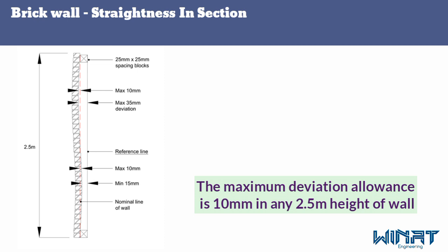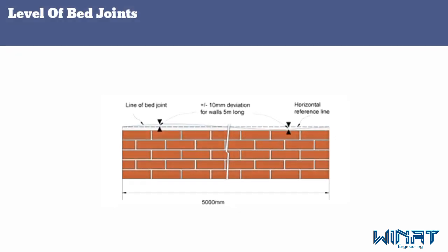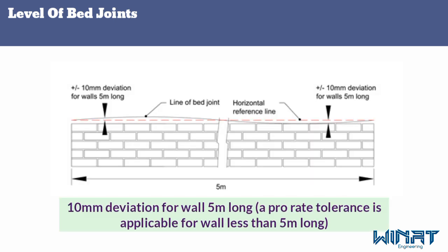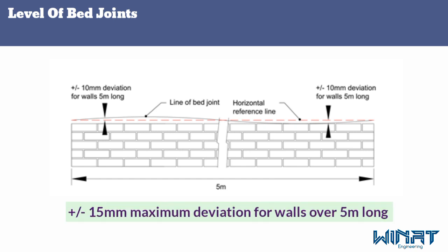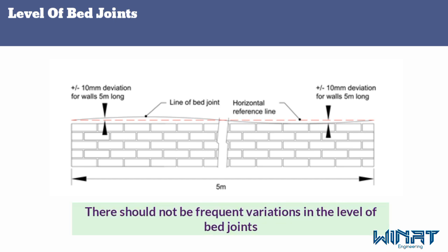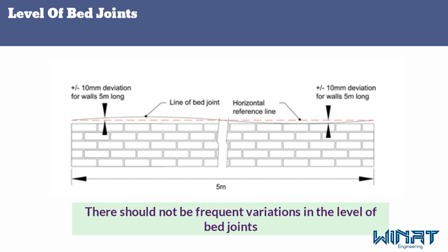The next tolerance is level of bed joints. The allowance is plus or minus 10 millimeters deviation for walls 5 meters long, with a pro-rata tolerance applicable for walls less than 5 meters. For walls over 5 meters long, the allowance is plus or minus 15 millimeters deviation. There should not be frequent variations in the level of bed joints.